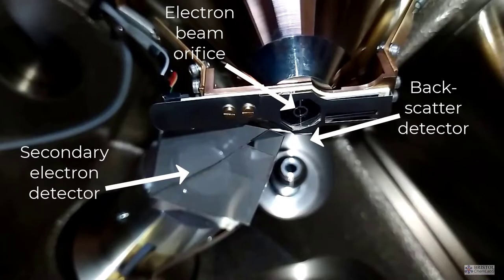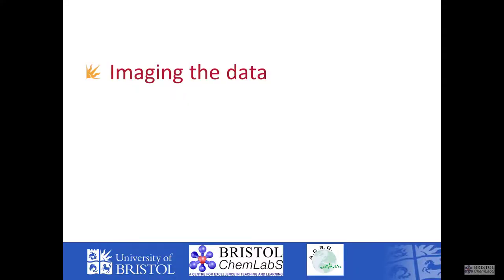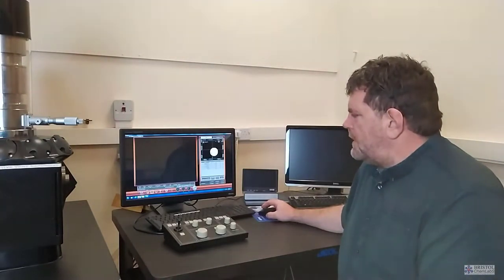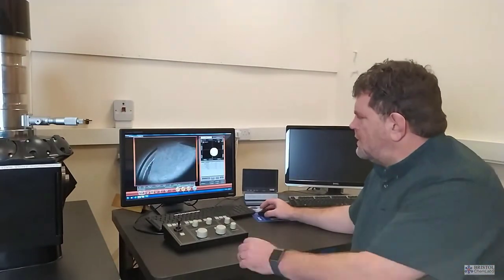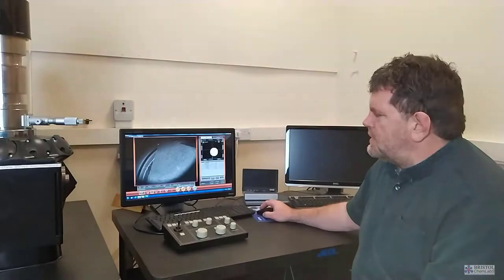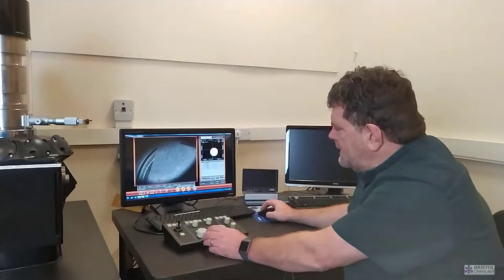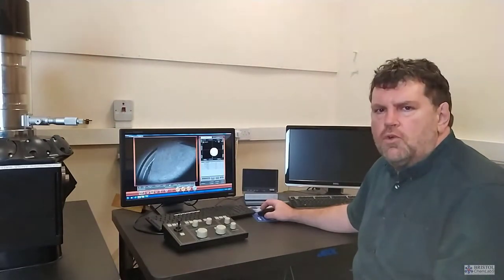Once we've loaded the samples into the microscope, we just click on the electron beam and it slowly warms the filament until we start seeing an image appear on the display. What you can see is a grayscale image, this is just the corner of a slide with a sample on. We're currently at a magnification of about 16 times, similar ranges to what you would get with a normal optical microscope.